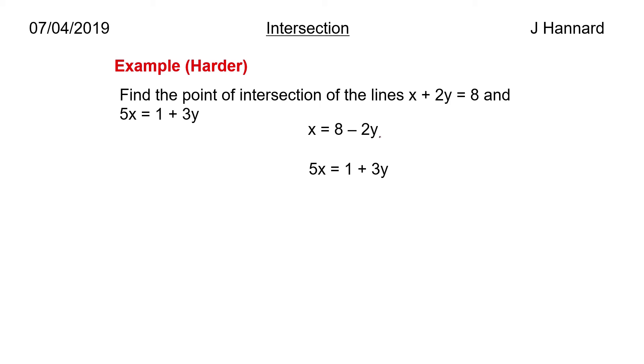We've got 5x equals 1 plus 3y, so wherever we see an x we replace that x with 8 minus 2y. So this time it comes down but the 5 remains because it's 5x that equals that. So we do 5 times 8 minus 2y equals 1 plus 3y. Then we expand the brackets and we get 40 minus 10y equals 1 plus 3y.